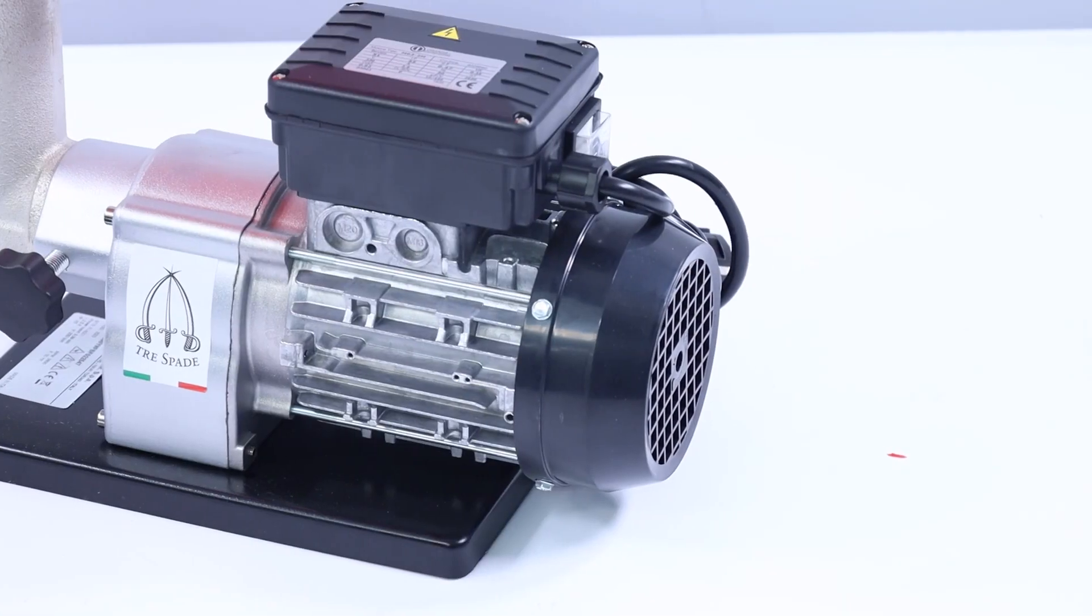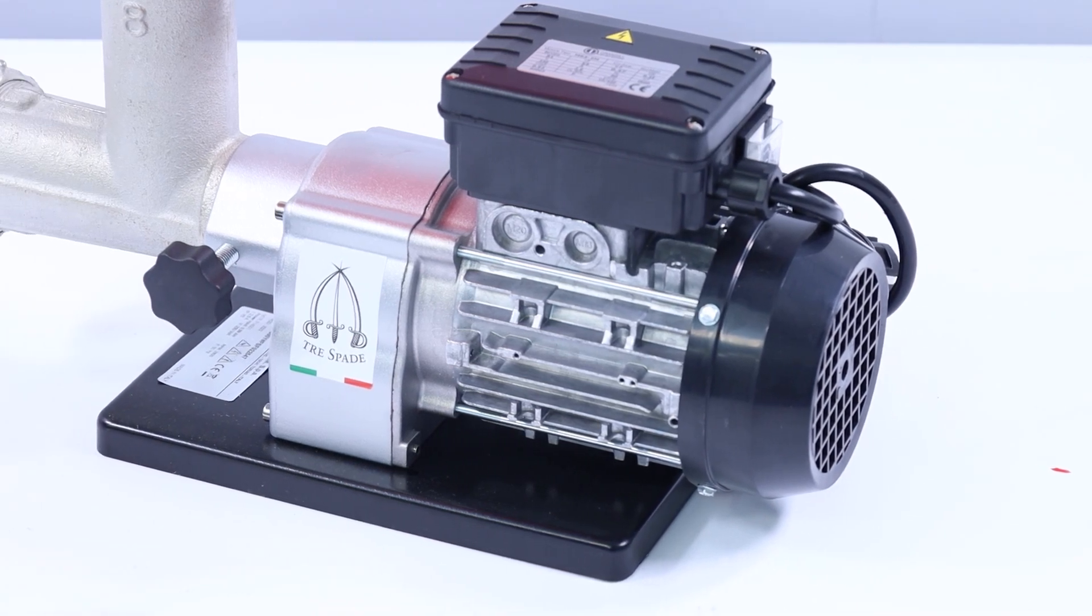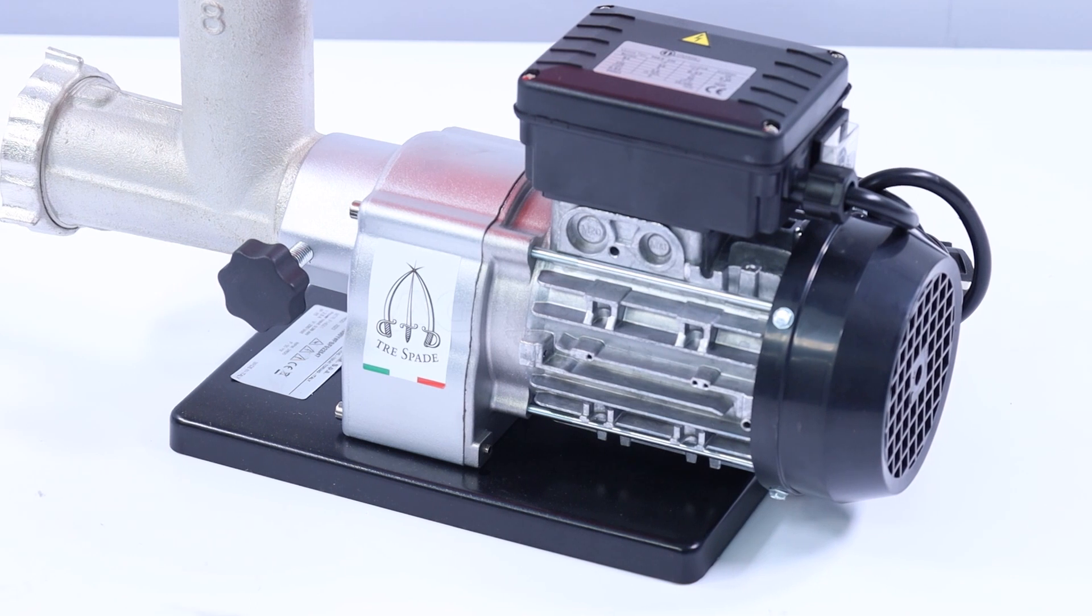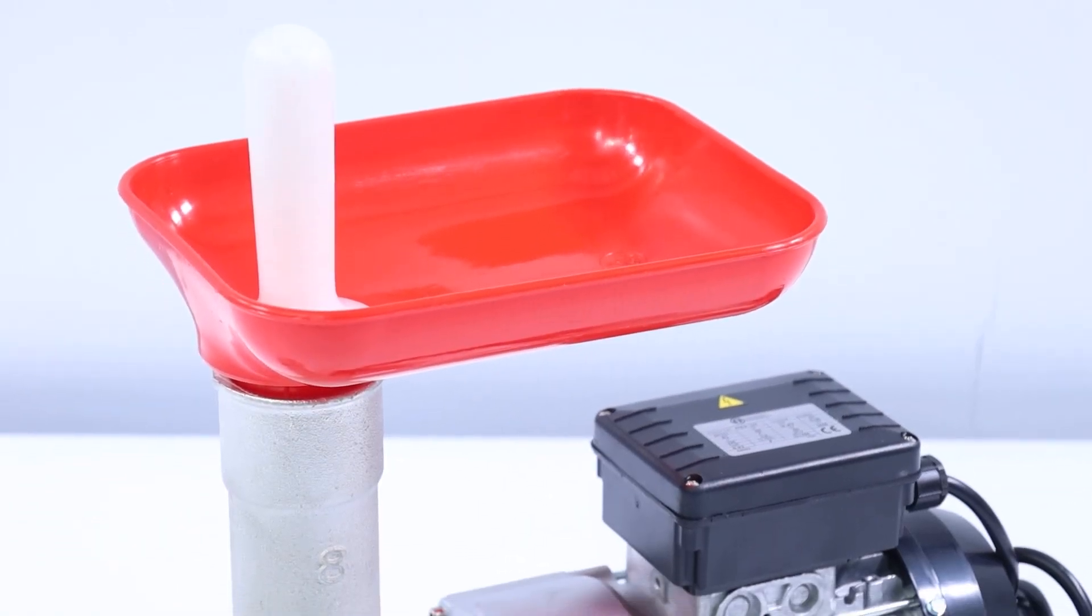The hopper, made of moplen, offers an ideal combination of lightness and strength. This plastic material, besides ensuring solidity, has also been chosen for its qualities that facilitate cleaning.